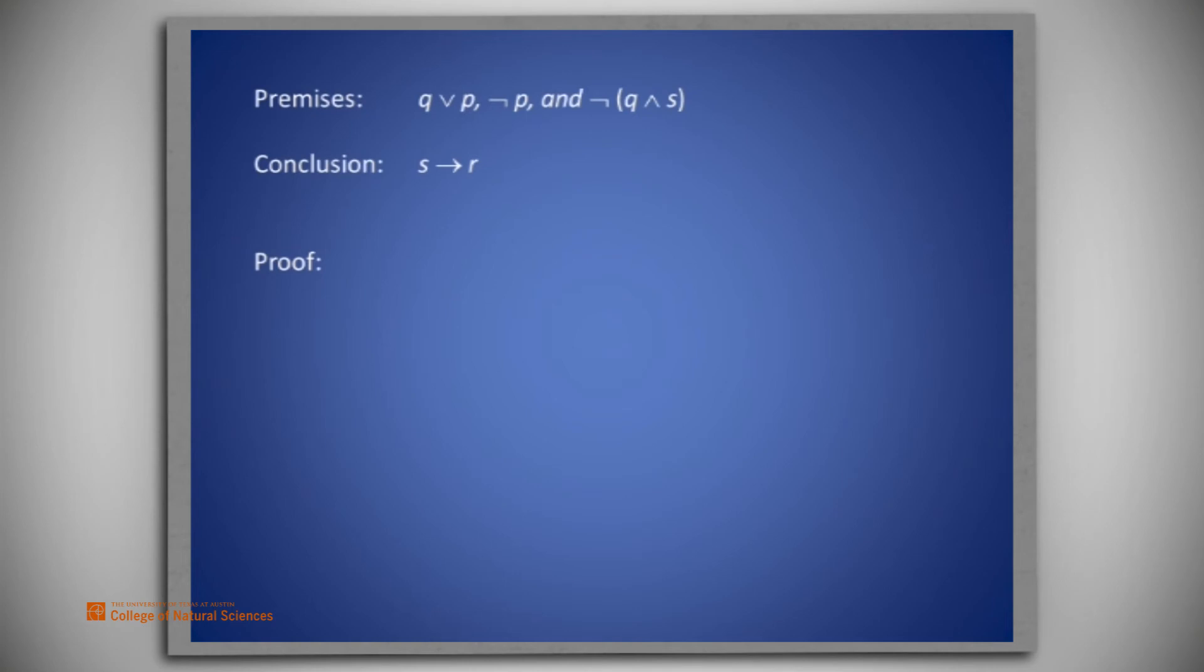Since S must be false, conditional disjunction could be applied to get our conclusion. So, having finished our strategy, let's see if we can construct a proof.